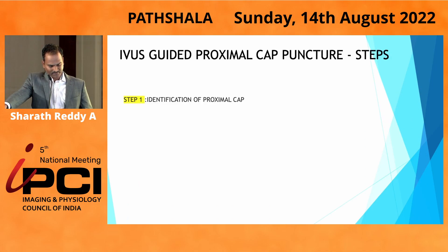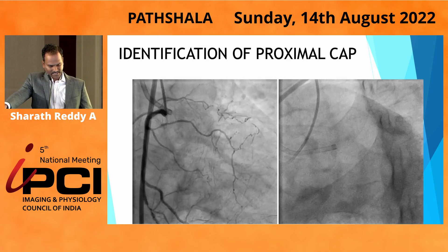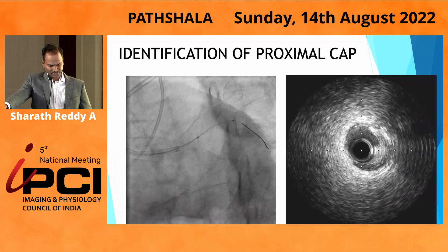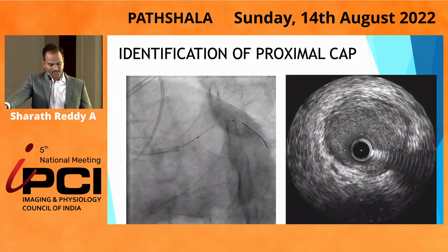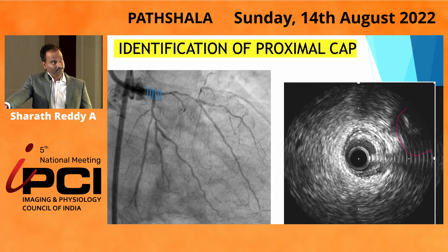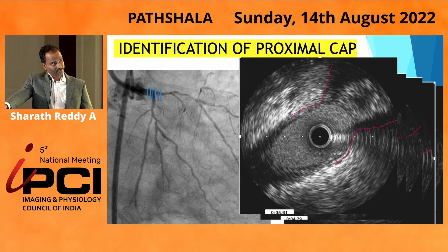The steps are: identification of the proximal cap, wiring technique, confirmation of central wire entry, then consolidate your position and move on. To identify the proximal cap, use a side branch close to your CTO vessel — in this case, the Ramus. On IVUS, you can see at three o'clock a shadow appearing and joining the main vessel. There is no shadow initially, then a shadow appears, and then there is fusion of these two shadows with no media visible between them. That fusion point is the proximal cap — that's where you start your wire.